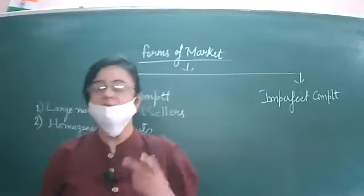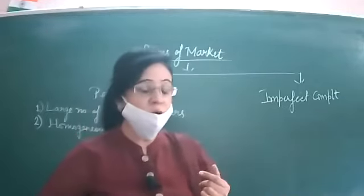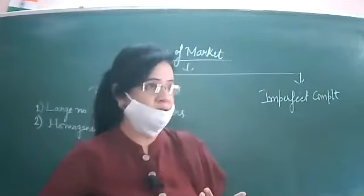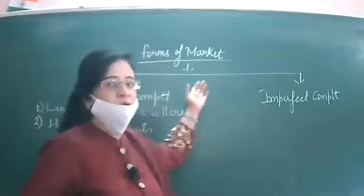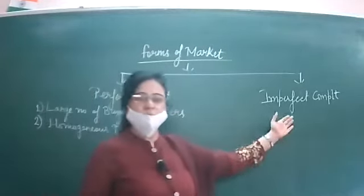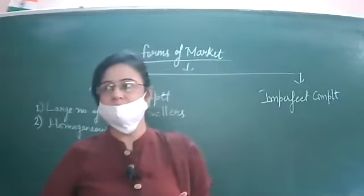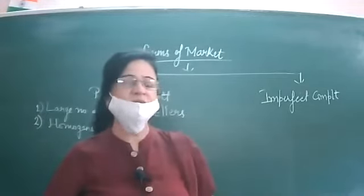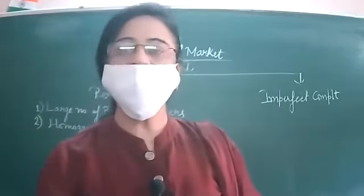So wherever there is a buyer, a seller, and a commodity, these three things together comprise a market in economics. Secondly, in economics, market is always referred to as a product market. So whenever we say that perfect competition or imperfect competition exists in the market, we are referring to a product market.